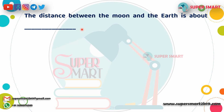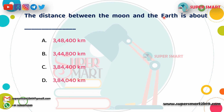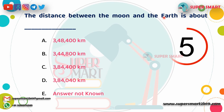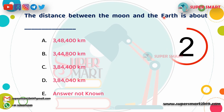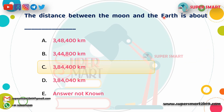Last question: What is the distance between the Moon and the Earth? Answer: The distance is 3,84,400 km.